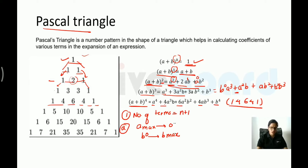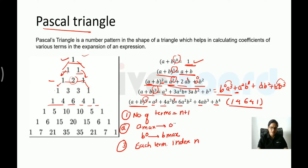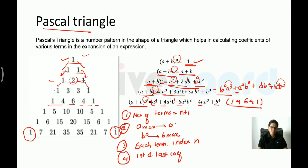For each term, if you add the indices of a and b, the sum equals the overall index n. For (a+b)^3: 3+0=3, 2+1=3, 1+2=3, 0+3=3. For power 4: similarly each term's indices sum to 4. Also, the first and last coefficients are always 1; the middle values vary.